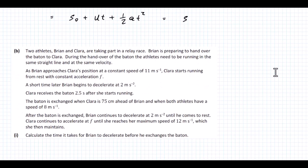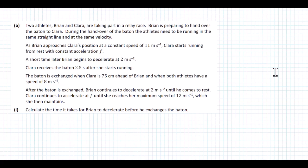Let's look at Part B. We have two athletes, Brian and Clara, taking part in a relay race. Brian is preparing to hand over the baton to Clara. During the handover, the athletes need to be running in the same straight line at the same velocity. As Brian approaches at a constant speed of 11 m/s, Clara starts running from rest with constant acceleration F. A short time later, Brian begins to decelerate at 2 m/s². Clara receives the baton 2.5 seconds after she starts running, when Clara is 75 cm ahead of Brian and both have a speed of 8 m/s. The first thing we have to calculate is the time it takes for Brian to decelerate before he exchanges the baton.